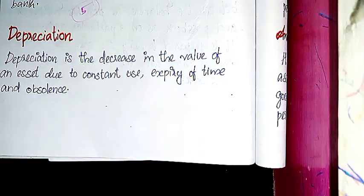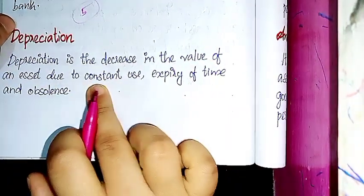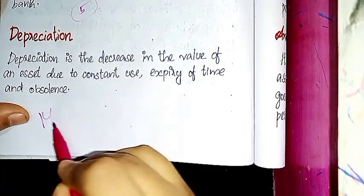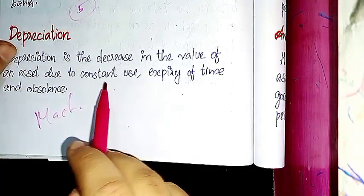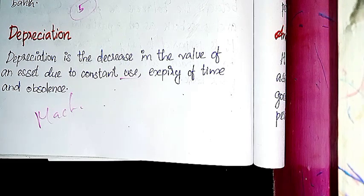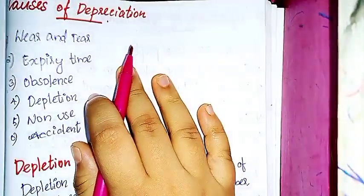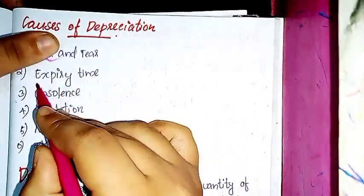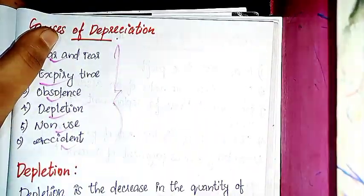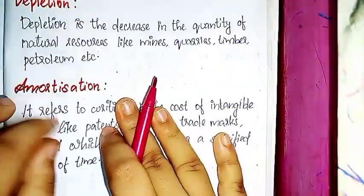Depreciation is the decrease in the value of an asset due to constant use, expiry of time, and obsolescence. For example, machinery in a business organization loses value over time through use. The causes of depreciation include: wear and tear, expiry of time, obsolescence, depletion, and non-use or accident.